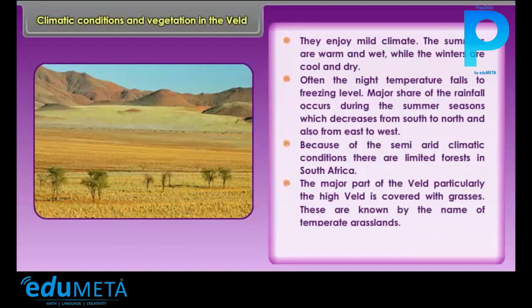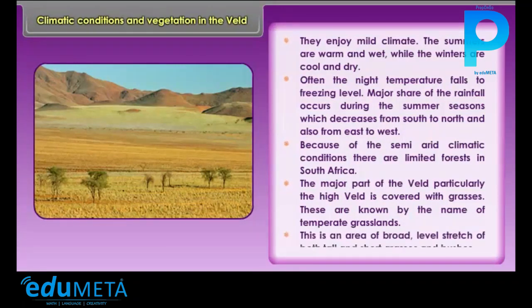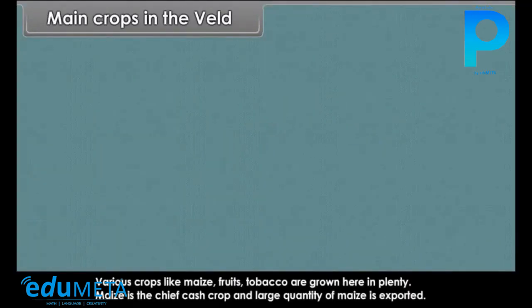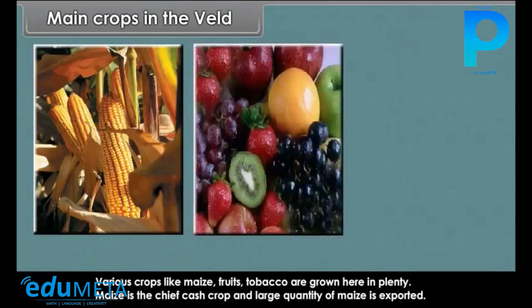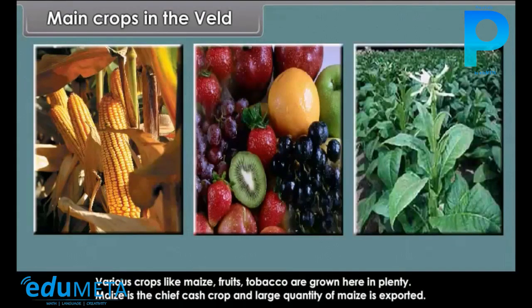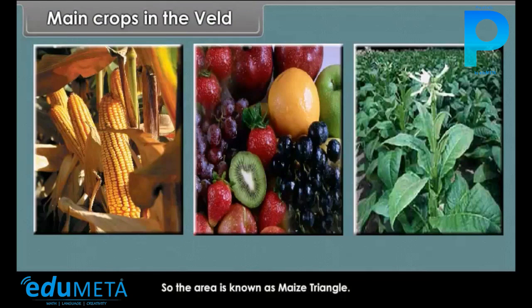The Veld is known by the name of temperate grasslands. It is an area of broad, level stretch of both tall and short grasses and bushes. Various crops like maize, fruits and tobacco are grown here in plenty. Maize is the chief cash crop and a large quantity of maize is exported, so the area is known as the maize triangle.